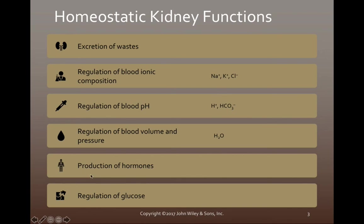We're also going to see that the kidneys will produce certain hormones and regulate how much glucose remains in the blood after filtration. Hopefully by now we have a general overview of the components of the urinary system and its overall functions. We're going to kick off this chapter by going over the anatomy of the kidneys, the blood supply inside of the kidneys, and the tubular system that the kidneys contain.